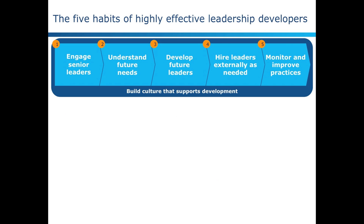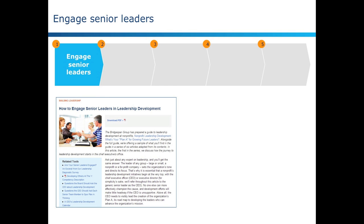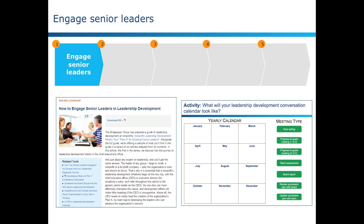Let's quickly review the five habits of highly effective leadership developers. Number one, engaging senior leaders — simply building excitement around leadership development within your organization. Our toolkit will help you think through strategies to engage senior leaders, help you design a conversation calendar so that you know what meetings you need to have, how often and with whom in order to keep momentum and focus, and provide a diagnostic survey for your board that you can use as a jumping off point to further engage them in the practice of building leaders.